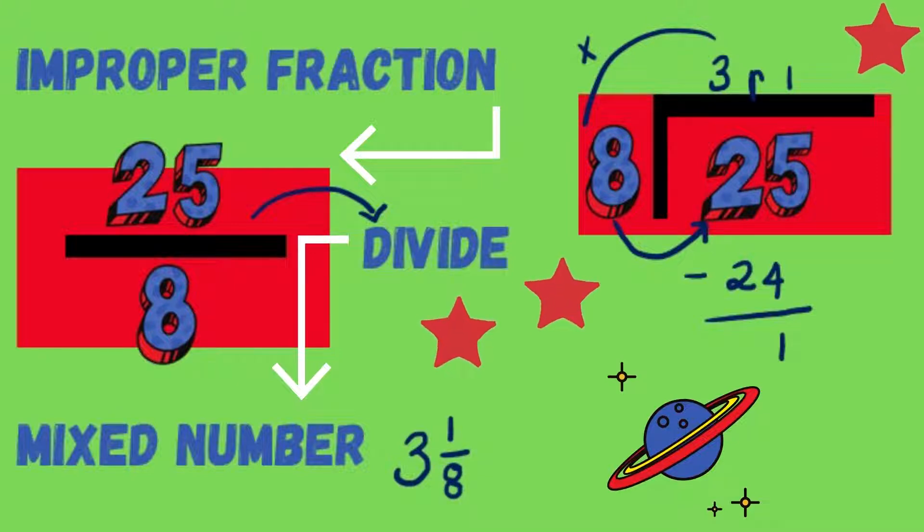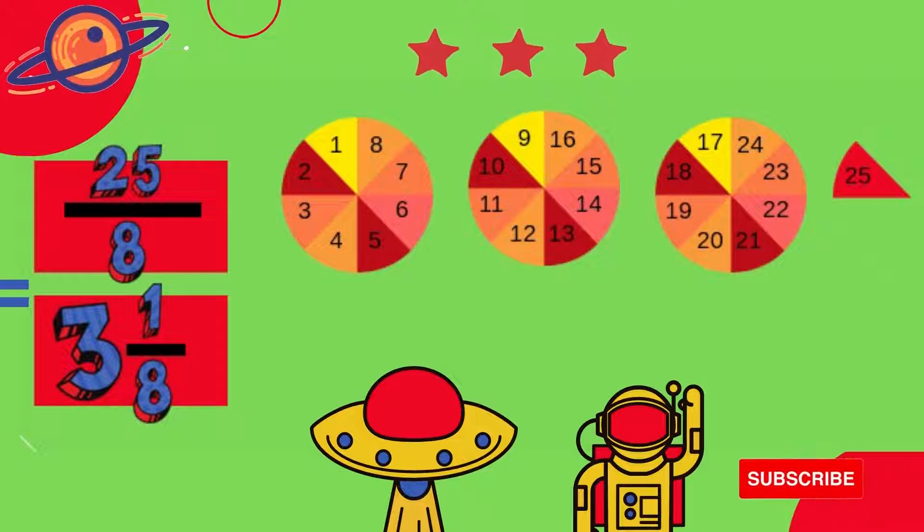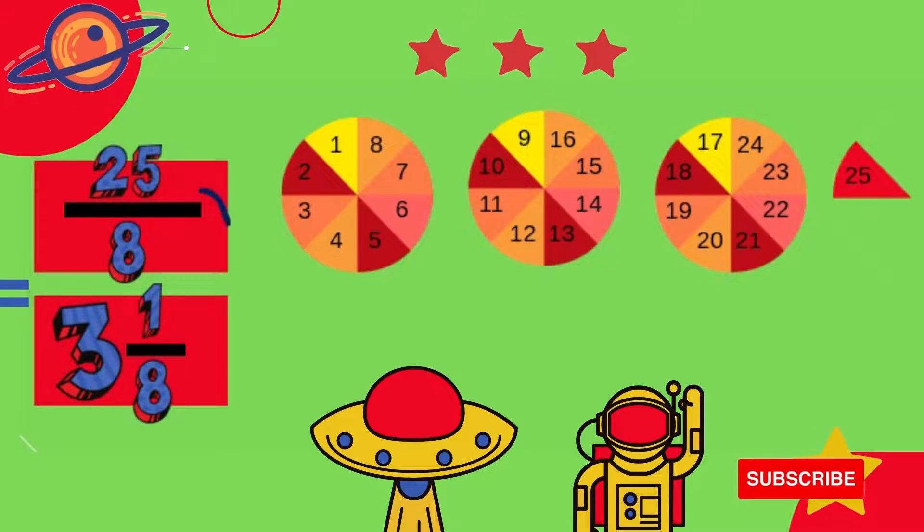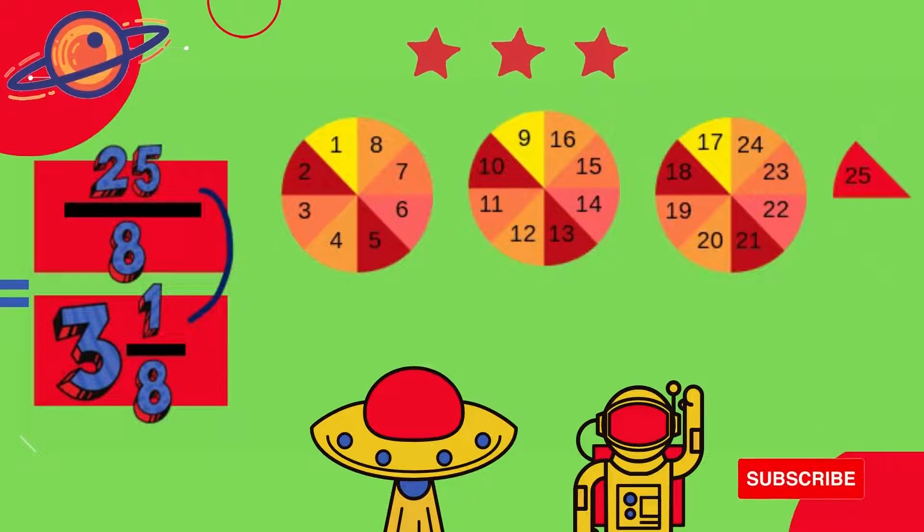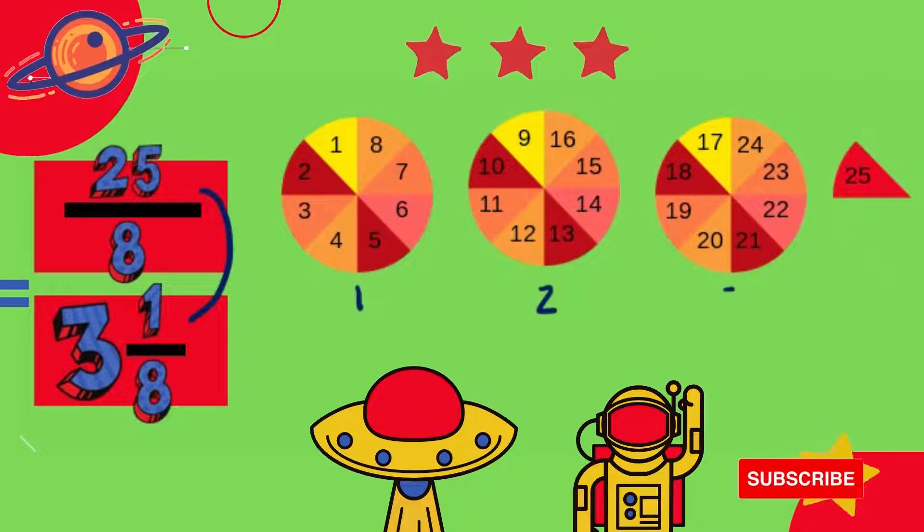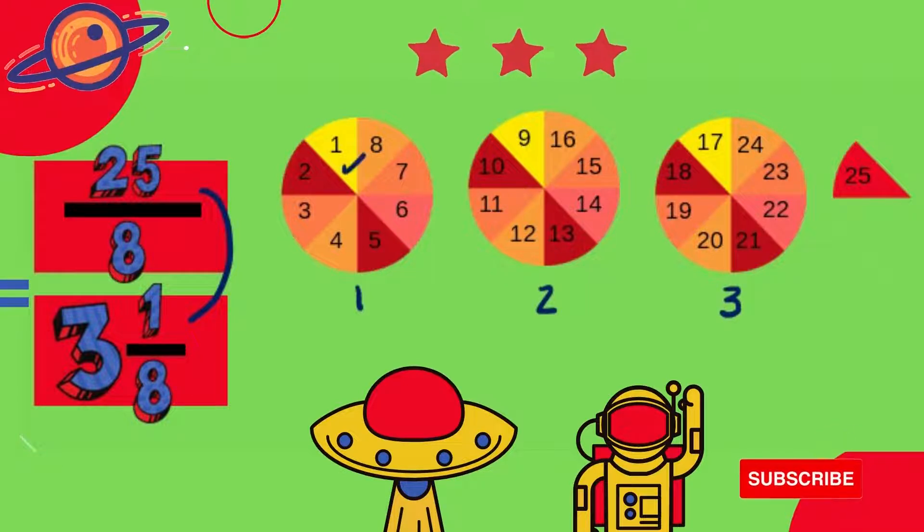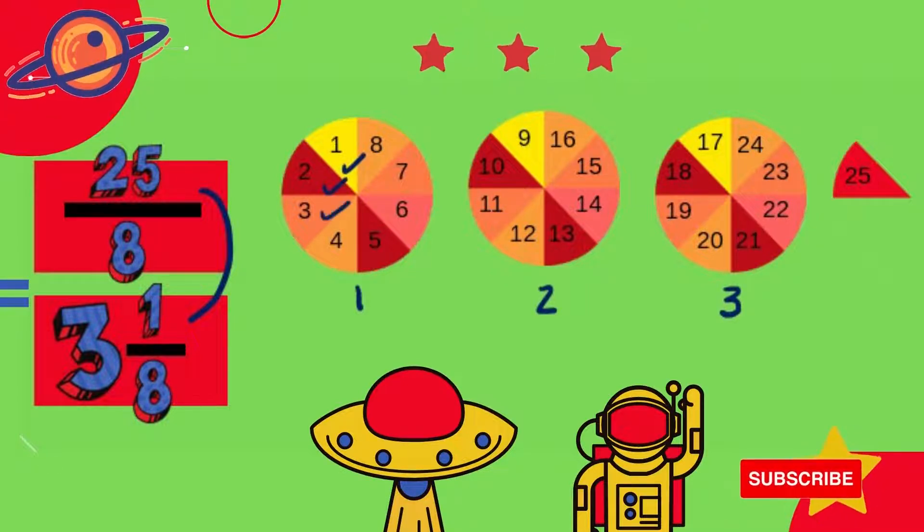I am going to use an illustration to show you why this method works. Here you can now visually see that 25 over 8, the improper fraction, is equal to 3 and 1 over 8. This is because I have taken one, two, three whole circles and divided them into one, two, three, four, five, six, seven, eight equal parts each.